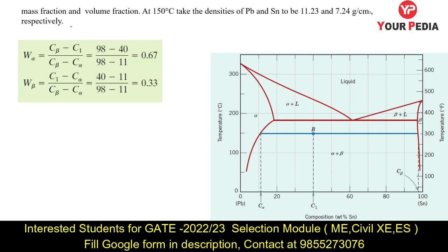Similarly, if a phase diagram is given and you need to calculate the mass fraction at 150 degrees Celsius, with densities of lead and tin provided, we focus on the weight percentage of alpha and beta. In the solid region, two solids — alpha and beta — can be present. This solid region is made up of two phases combined: alpha and beta. At composition C₁ at point B, draw a horizontal line — the blue line — which intersects the alpha boundary at C_alpha and the beta boundary at C_beta.